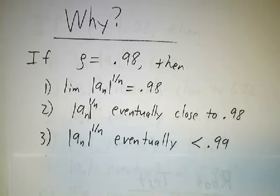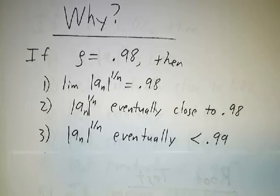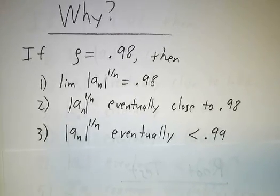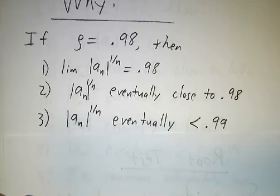which means it's eventually less than your favorite number between 0.98 and 1. My favorite number between 0.98 and 1 is 0.99, so that's what we're going to use. So it's eventually less than 0.99.